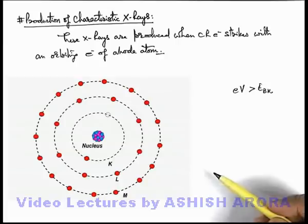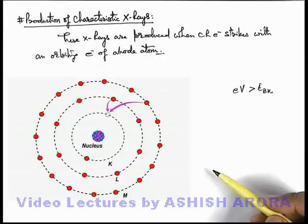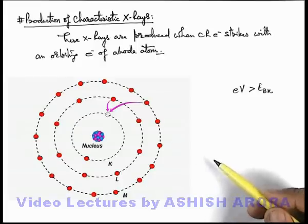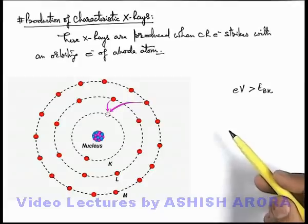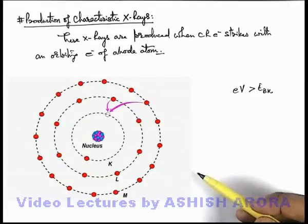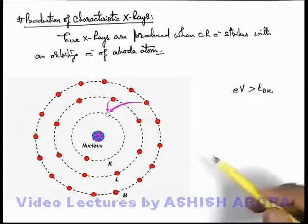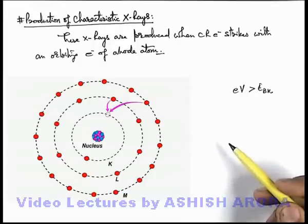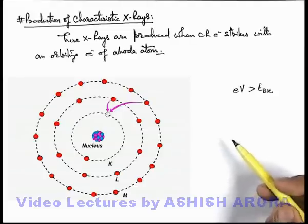Now to fill up this vacancy, the outer electrons may jump and fill this vacancy. In the process, when the outer electrons make a transition to the K-shell, they emit electromagnetic photons corresponding to the energy difference of the K-shell and the shell from which the electron is transiting. And if this energy difference is of the order of the energy of x-rays, the emitted photon can be taken as the characteristic x-rays.